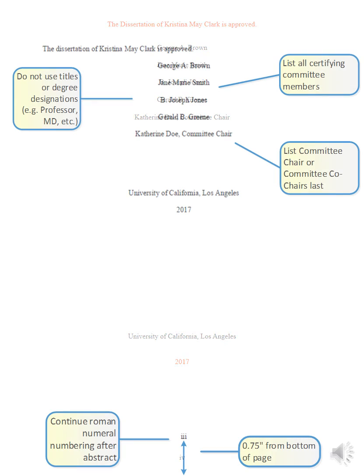Finally, our common mistakes on the committee page include the following. The dissertation approval notice must be aligned to the left of the page, and there is too much space between the committee member names and the university names. Also remember to include the year you submit your manuscript. Here is the correct sample now.